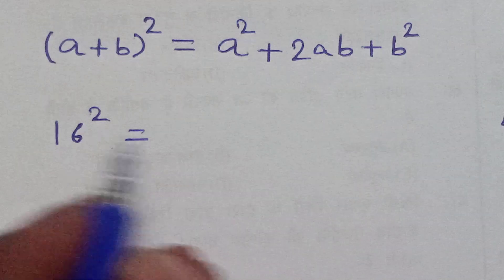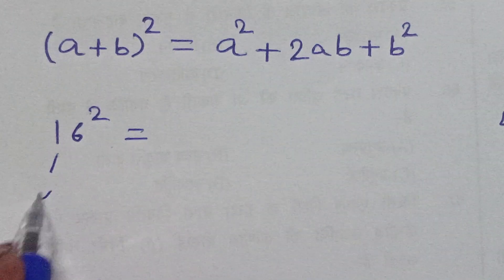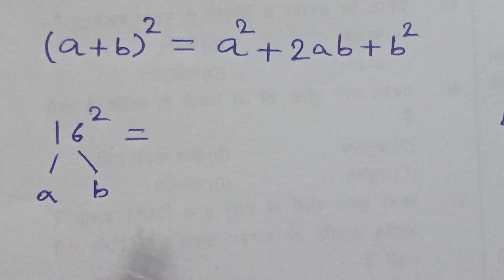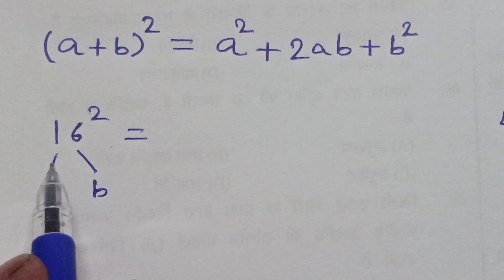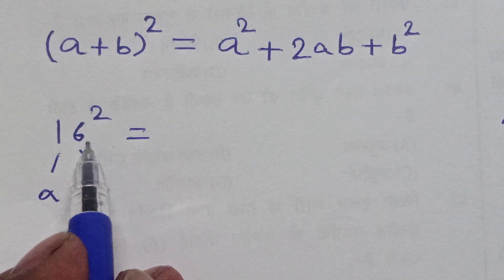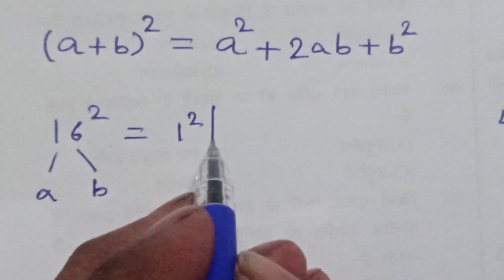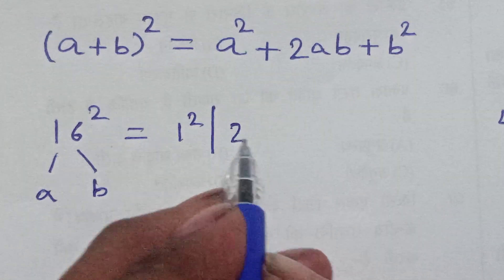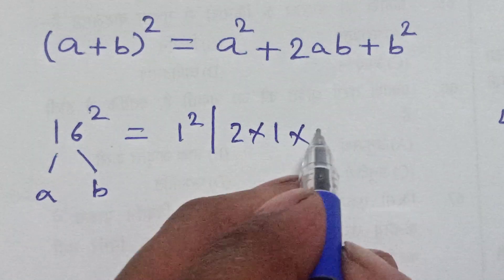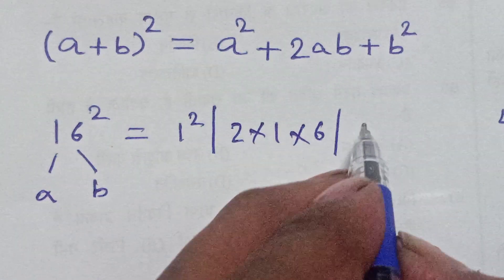So what is, let this is a and this is b. Then a plus b whole square is a square plus 2ab plus b square.